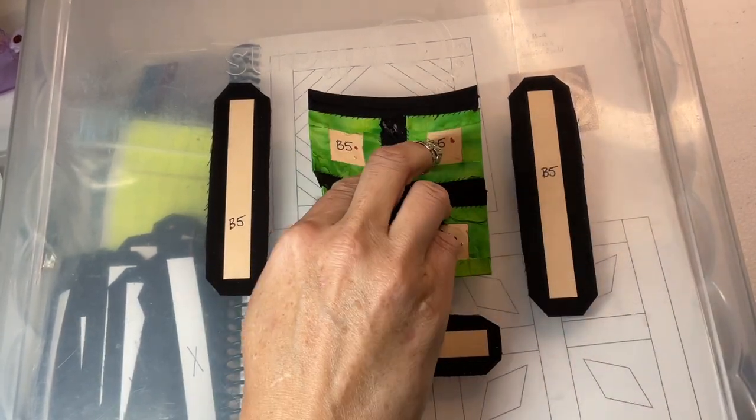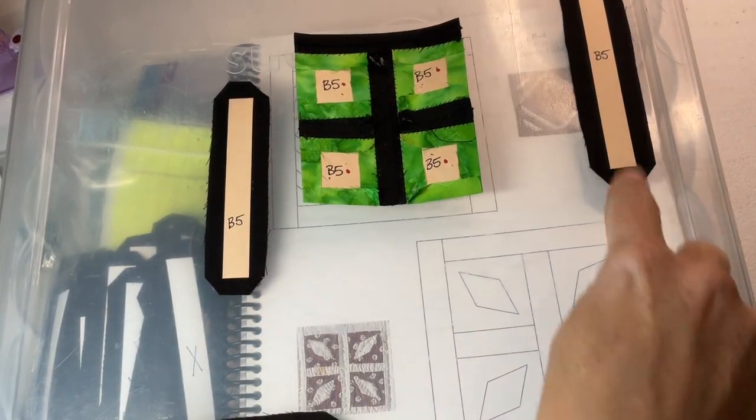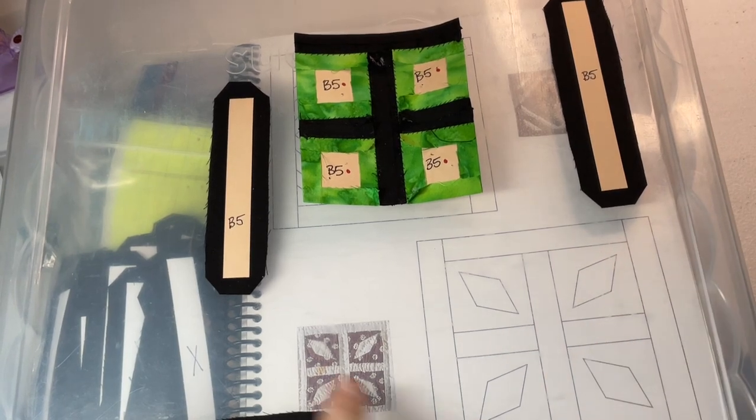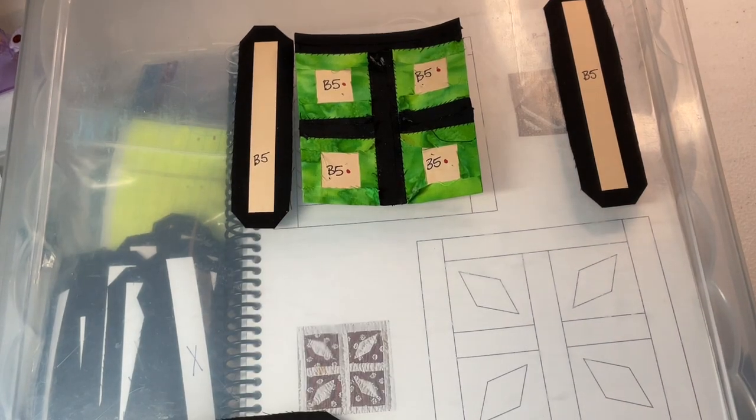So I've attached this top bar to the center, and then the next one to do is the full length, so that's the last one. Next one to do would be this one that's going to go from here to here. So I'll go ahead and do that.